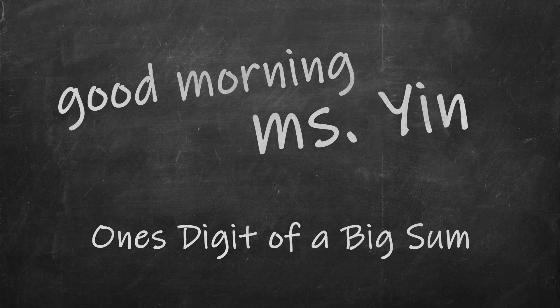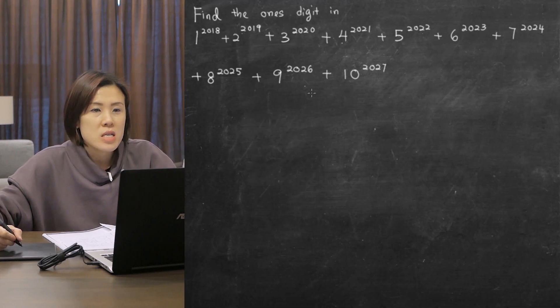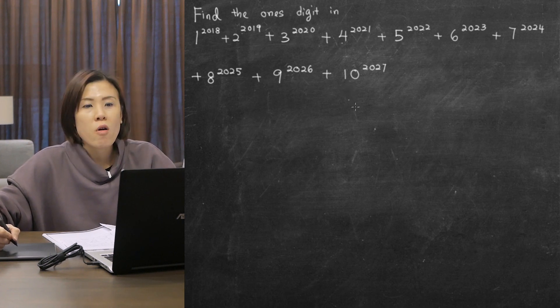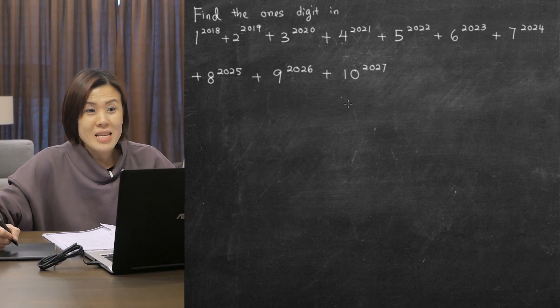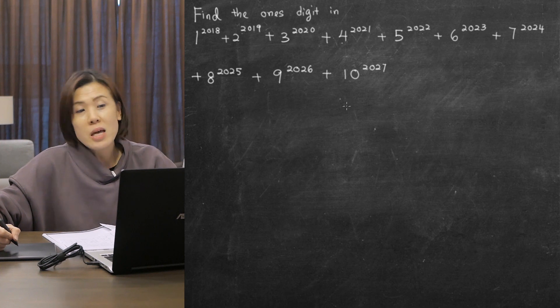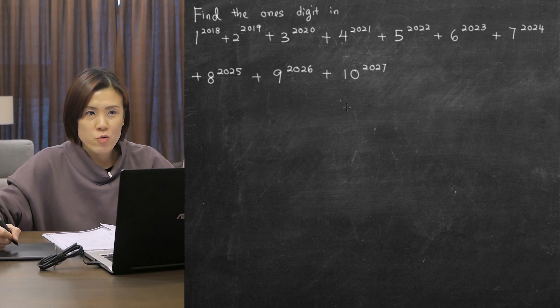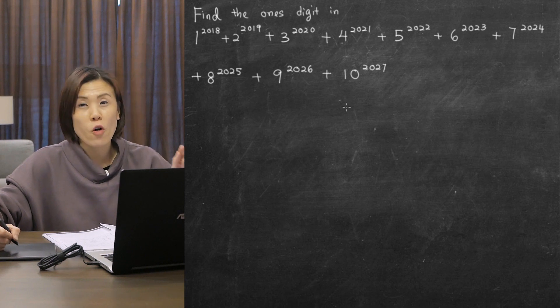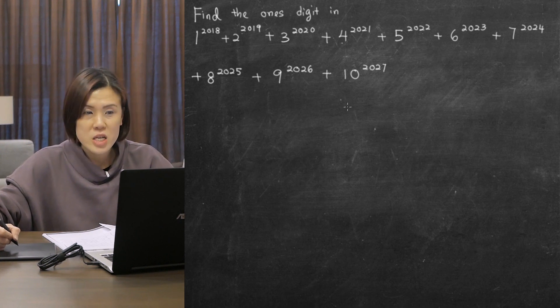Good morning class, I'm Miss Ian. Today I'll be showing you another Math Olympiad question. We have to find the ones digit in this sum. As you can see, these calculations involve a very big sum that we can't even obtain from a calculator. But the key is we only need to find the ones digit, so the sum of the ones digits of each number will give us the ones digit of this big sum.